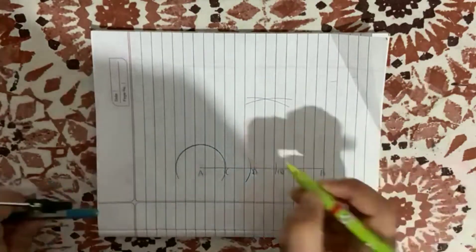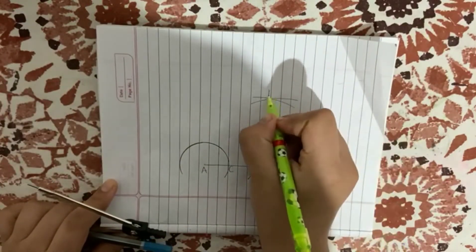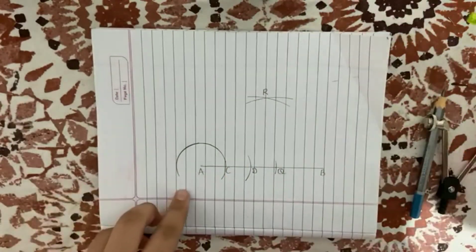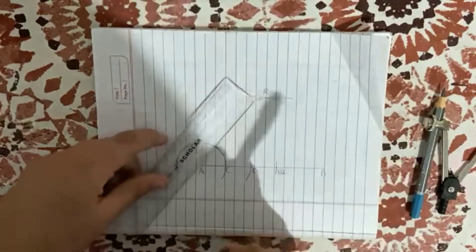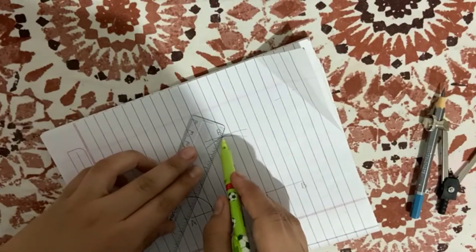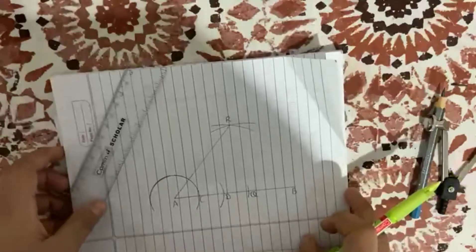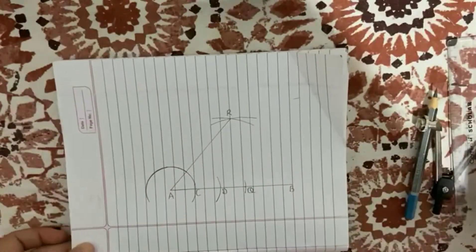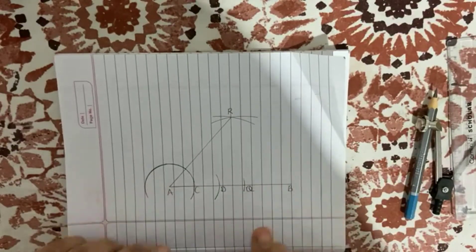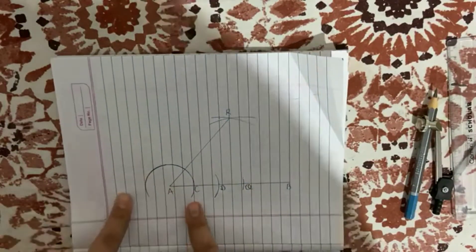So here we have got a point which is R. Now what we will do is join A and R together. Done. So angle RAB equals 50 degrees. So let's verify if it is or not.